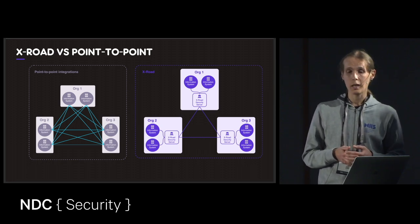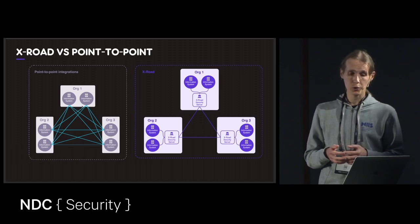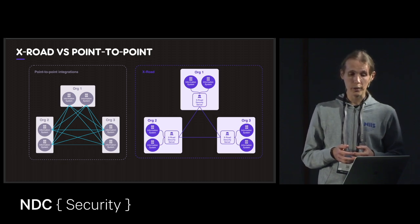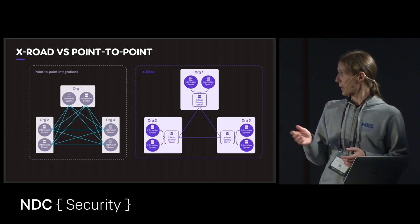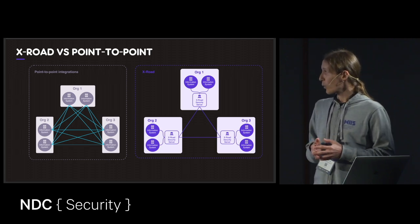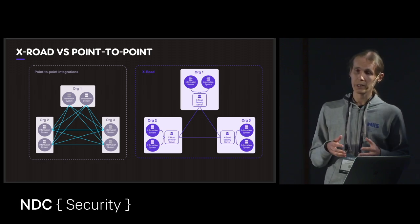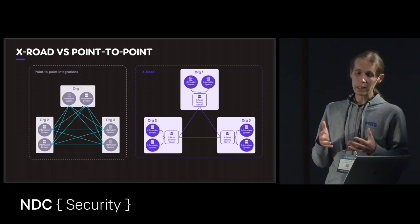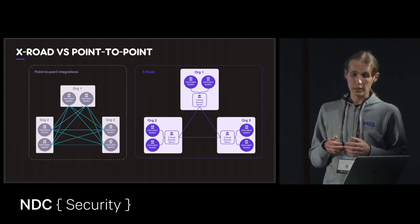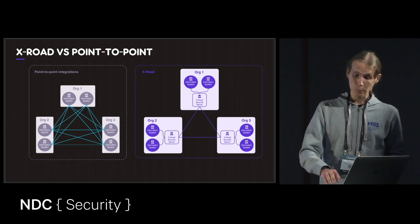When XROAD is used, information systems are not connected to each other directly, but instead through unified access points called security servers. Each organization has its own security server, and their information systems connect to each other through those servers. The security server is an access point gateway to the outside world that guarantees connections always use the same security policies and configurations, and provides a range of other features.